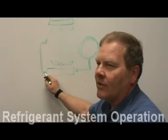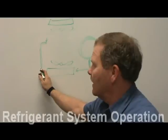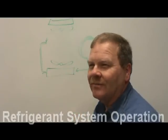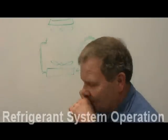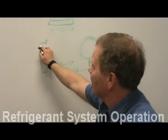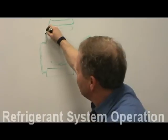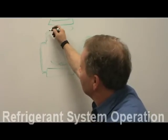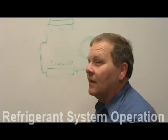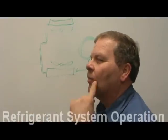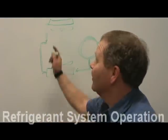When the refrigerant leaves the condenser, it's a high-pressure liquid. Coming up through our orifice, we're changing states. What are we changing to? Not a gas yet — it's changing to a low-pressure liquid. It has to be liquid when it goes into the evaporator, because what happens in there? It evaporates. It cannot evaporate unless it's already a liquid when it goes in.